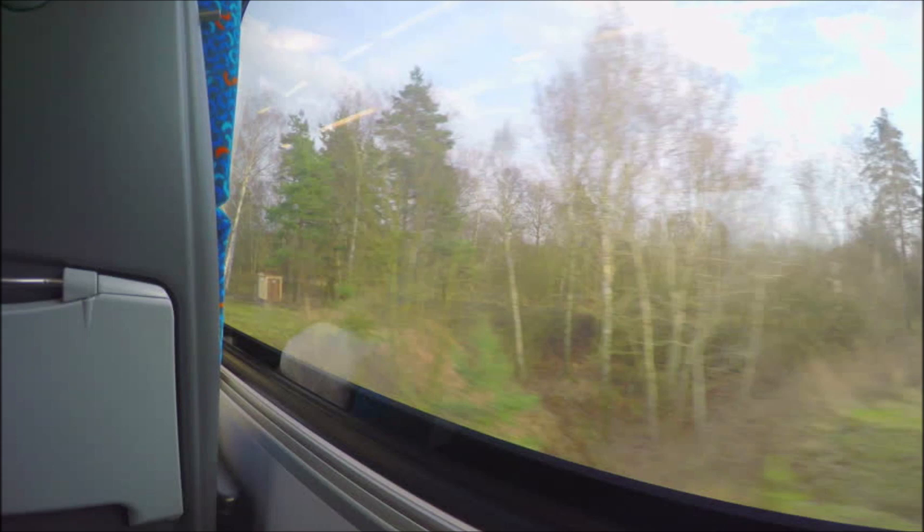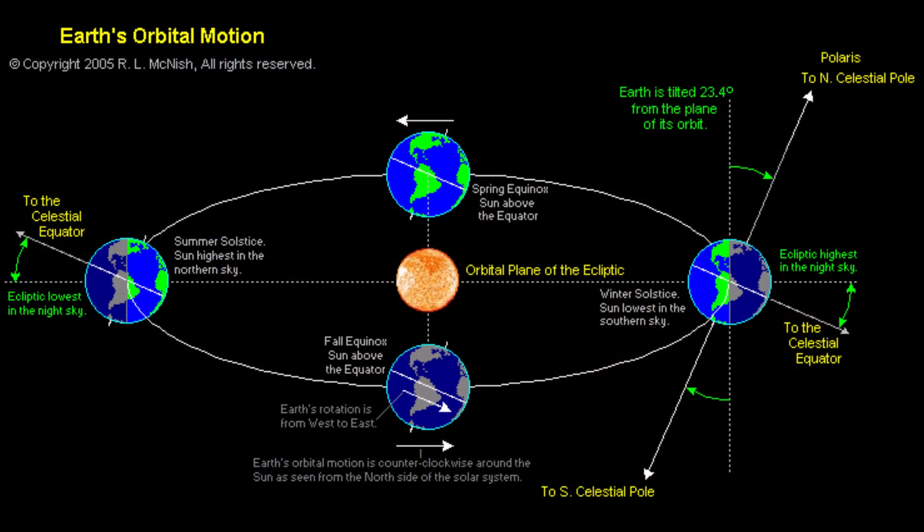Similarly, it is not the sun that is moving. The sun is in a stationary position. It is the Earth which rotates around the sun, and we feel that the sun is changing its position from east to west daily.